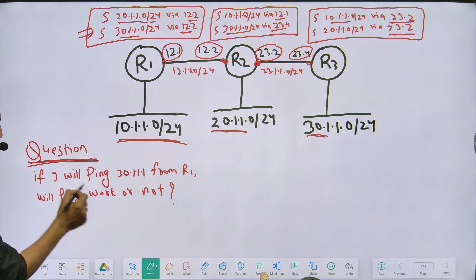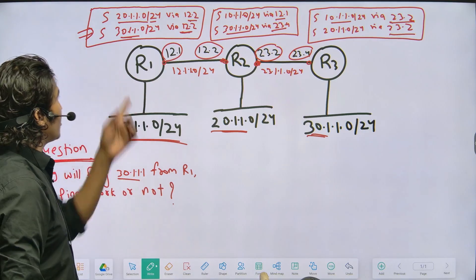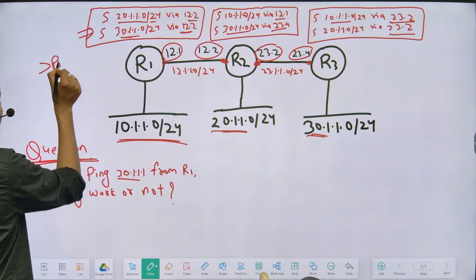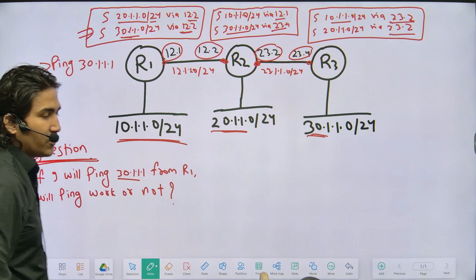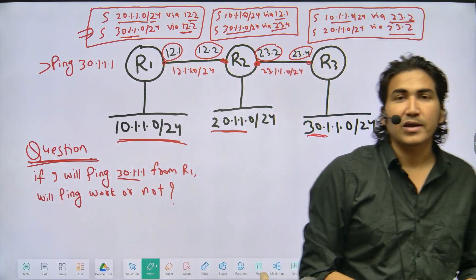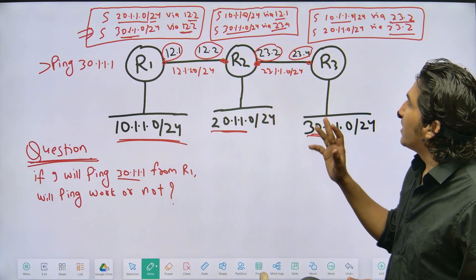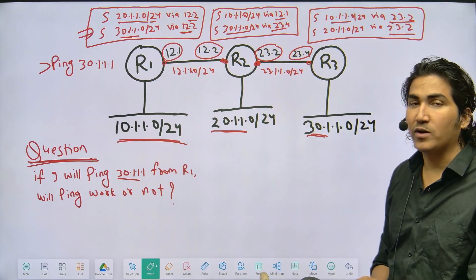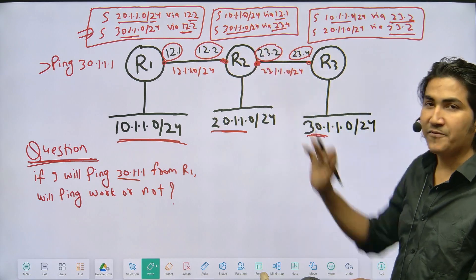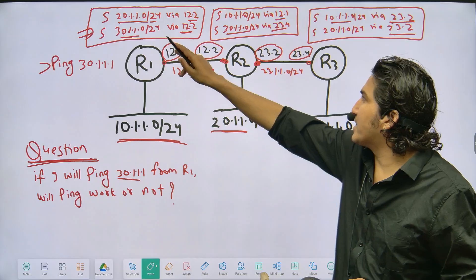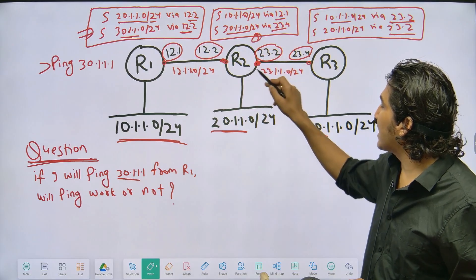Now the question is: if I ping 30.1.1.1 from Router 1 using the ping command from privileged mode, will the ping work or not? There is a user with IP address 30.1.1.1 and gateway 30.100 in LAN 3, and a user with IP 10.1.1.1 in LAN 1. I am pinging 30.1.1.1 from the privileged mode of Router 1.